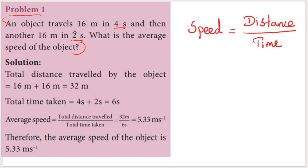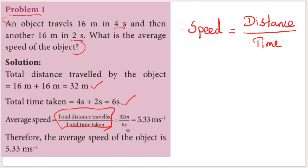To find average speed, we calculate total distance divided by total time. Total distance = 16 + 16 = 32 meters. Total time = 4 + 2 = 6 seconds. So average speed = 32 divided by 6, which gives approximately 5.33 m s⁻¹. That is how we calculate the average speed of the object.